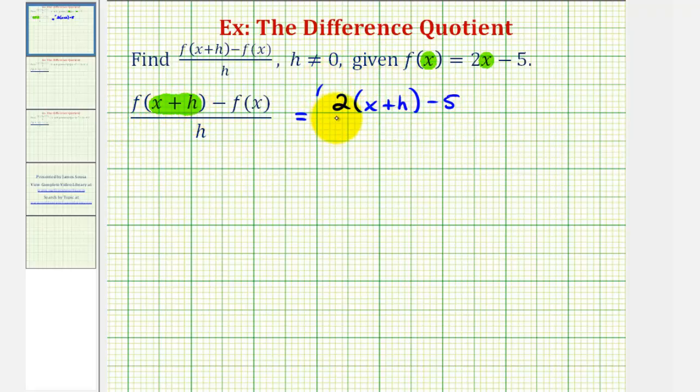Let's put this in parentheses. And now we have to subtract f of x, so we'll subtract the quantity two x minus five. And now we'll divide all of this by h.